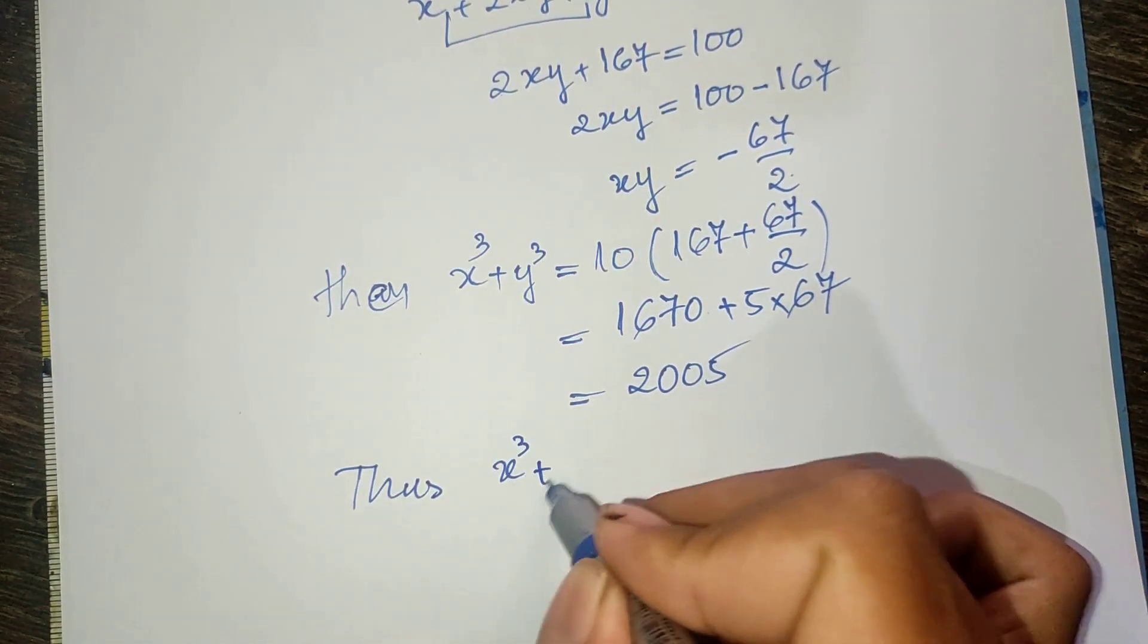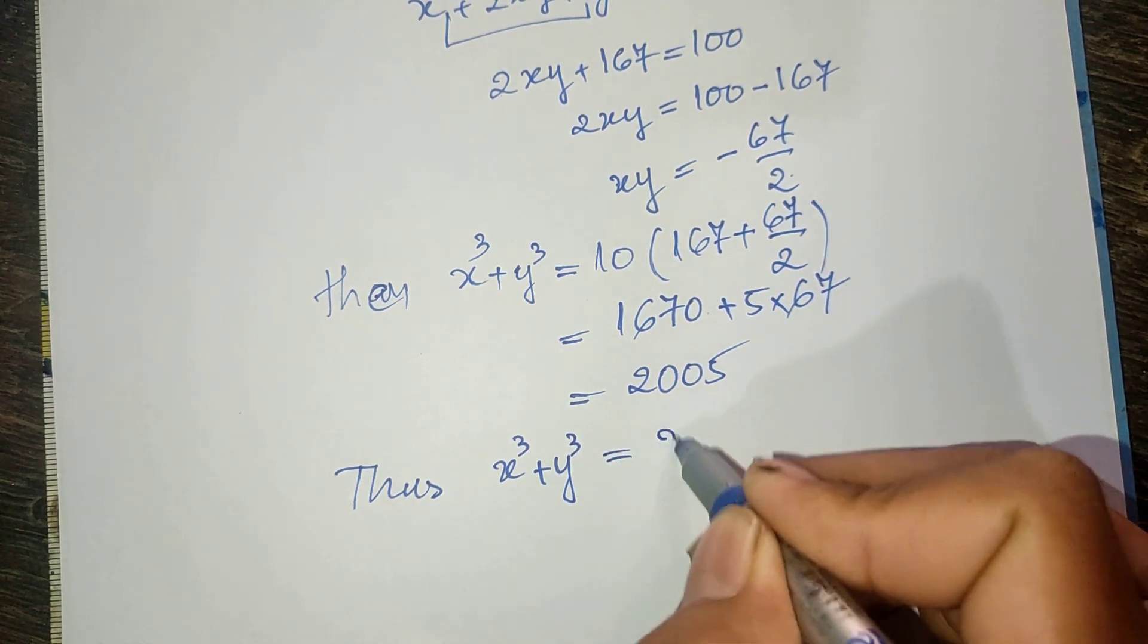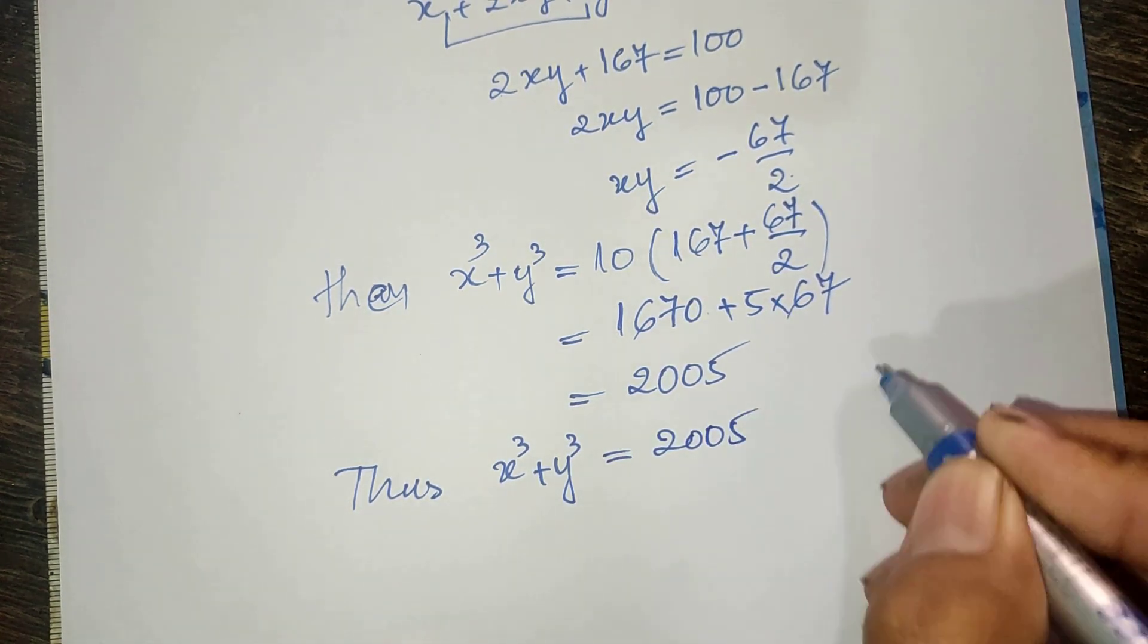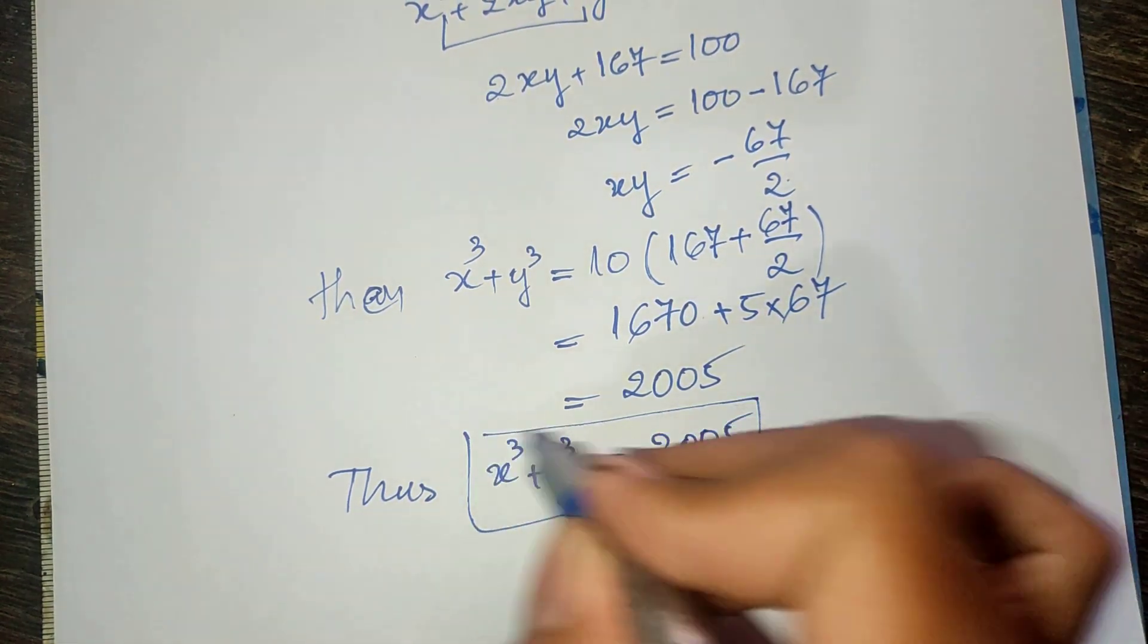Yes, x power 3 plus y power 3 equals 2005 is our solution.